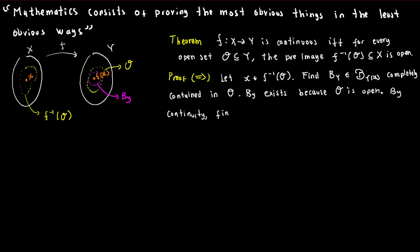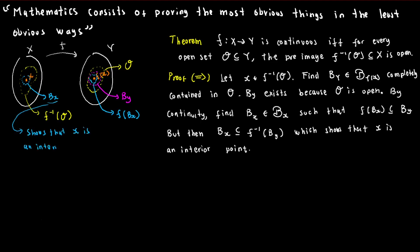By the continuity of f, we know that there exists an open ball B_x centered at x such that f(B_x) is contained in B_y. This means that the open ball B_x is completely contained in the preimage of O, because any point of B_x maps to a point in B_y, which is in turn completely contained in O. Therefore, x is an interior point of the preimage of O, and so the preimage of O is open as desired.